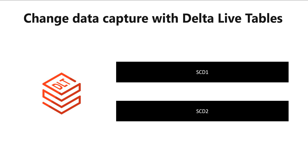SCD-1 and SCD-2. SCD-1 is used to update your record directly — history is not retained for records that are updated. SCD-2 is now available in public preview and is used to retain a history of a record, either on all updates or on updates to a specific set of columns.